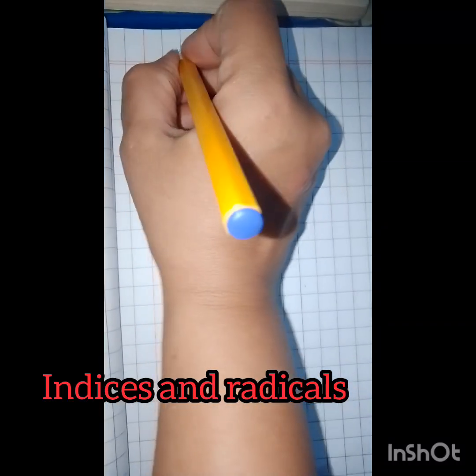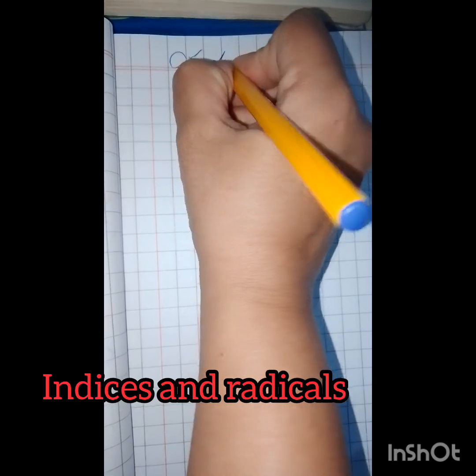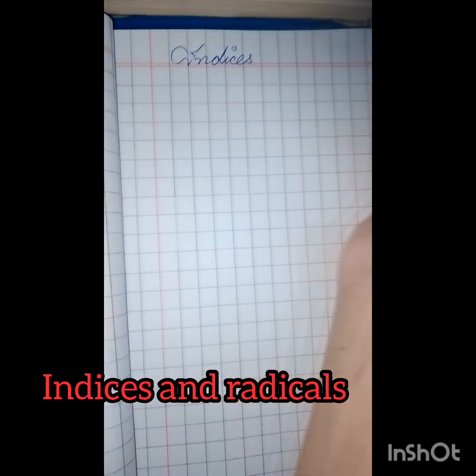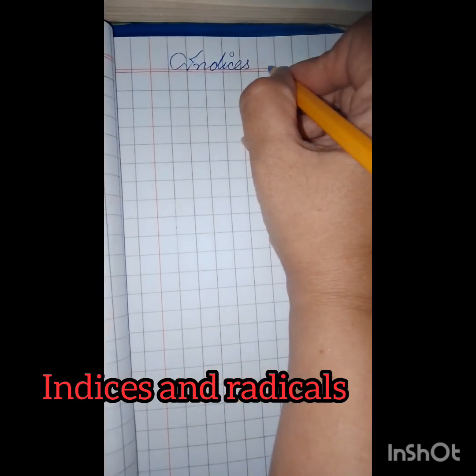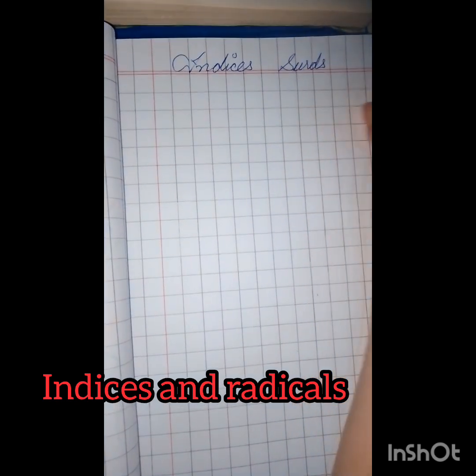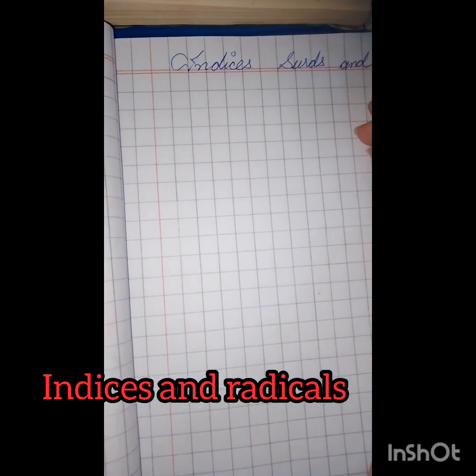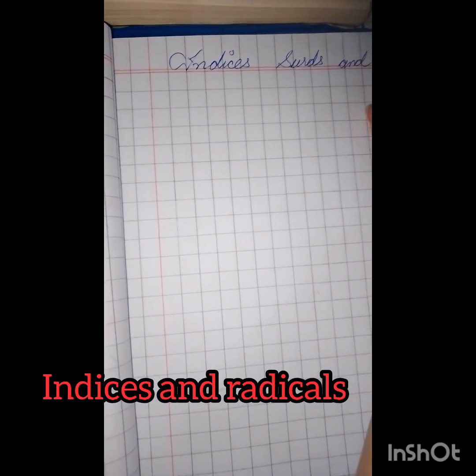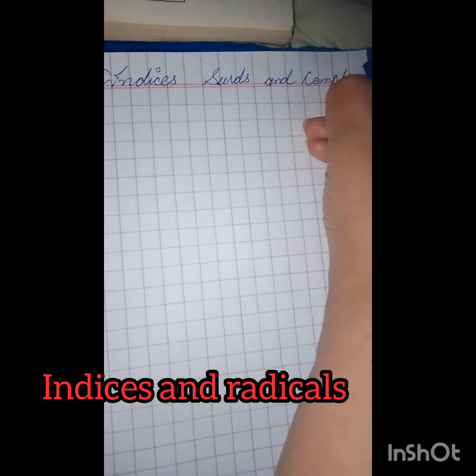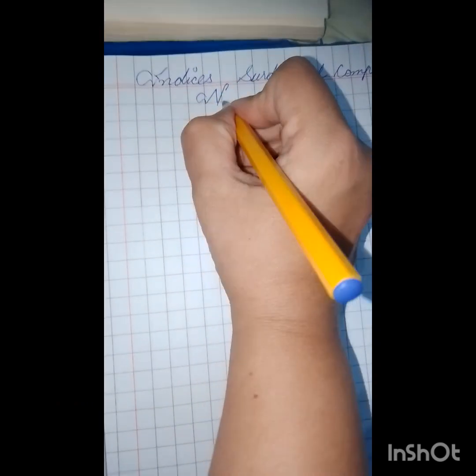Hello everyone. Today we are going to discuss indices and moreover then we will discuss complex numbers. So here radicals and radicands are the factors which we are going to discuss under the outline of indices.